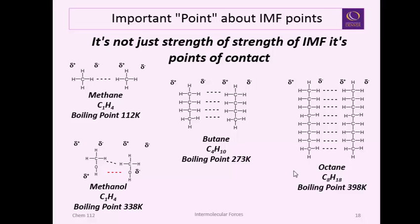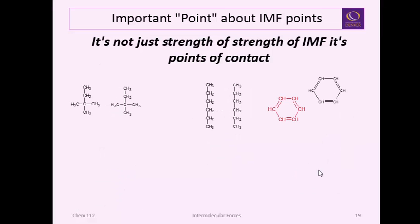The last point about IMF points is another thing you can do to change the points of attraction is you can change the points of contact by changing the shape of the molecules. So my comparison here is if I take one two three four five six basically we have six carbons this is dimethyl butane but it has six carbons.